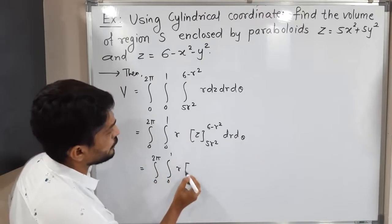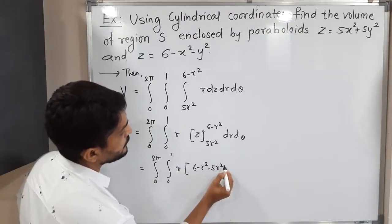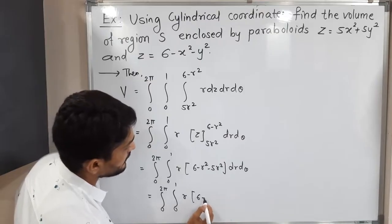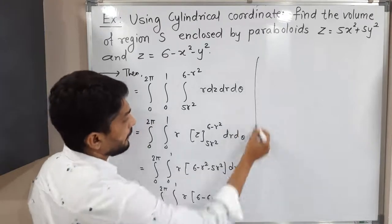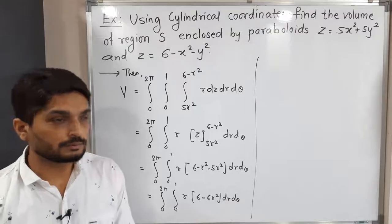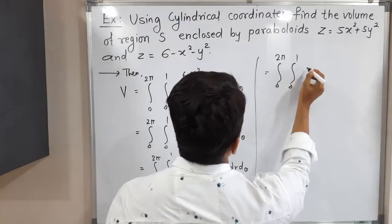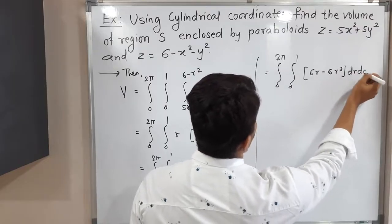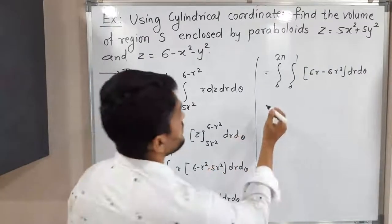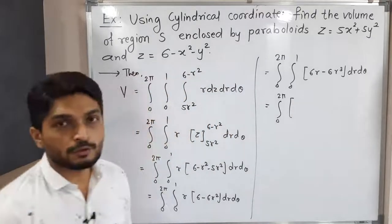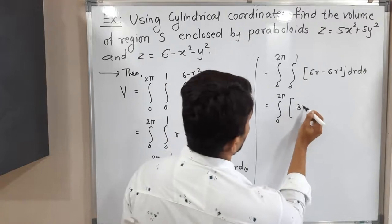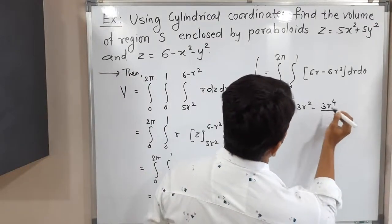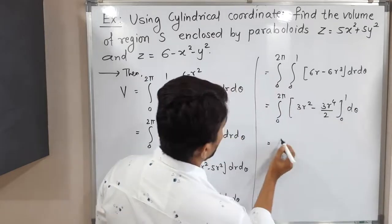Simplifying inside: r(6 - 6r²) = 6r - 6r³. So we have ∫₀²π ∫₀¹ (6r - 6r³) dr dθ. Integrating with respect to r: 6·(r²/2) - 6·(r⁴/4) = 3r² - (3r⁴/2), evaluated from 0 to 1. Putting in r = 1 gives 3 - 3/2 = 3/2, and r = 0 gives 0. So we have ∫₀²π (3/2) dθ.